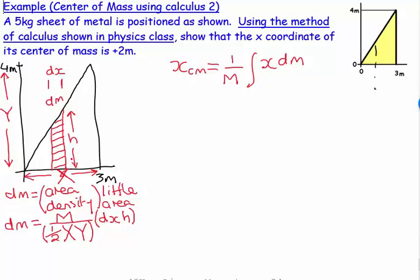There's an issue here: when the slice is on the far left, h is quite small; on the far right, h is nearly as large as big Y; and in the middle it's somewhere in between. So h is a variable — it depends on how far along the x axis the slice is, which I'll call little x.